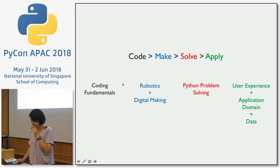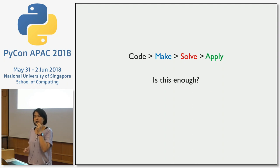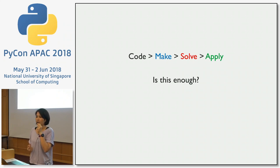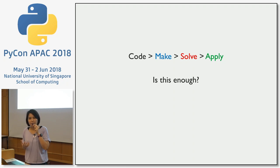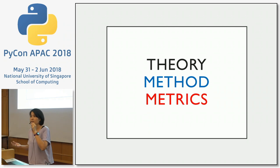By 'code' I mean coding fundamentals, robotics, digital making, etc. After doing that for a while, we start to ask: is this enough? What are we really doing when we say code, make, solve problems, and apply them? A mentor taught me that before we start with the method, we start with the theory. The theory drives the method, and once we have the method, we can develop metrics to see whether we are successful in implementing our methods.